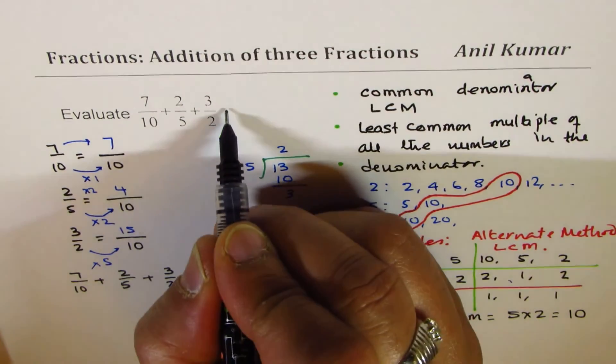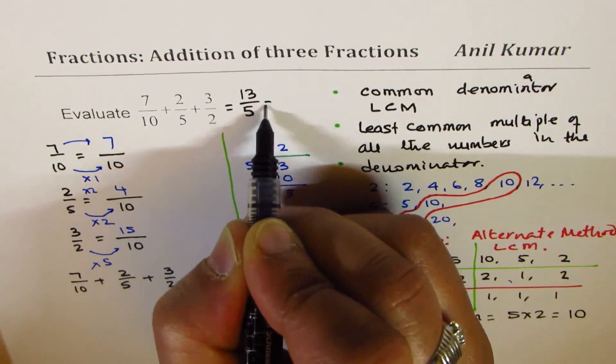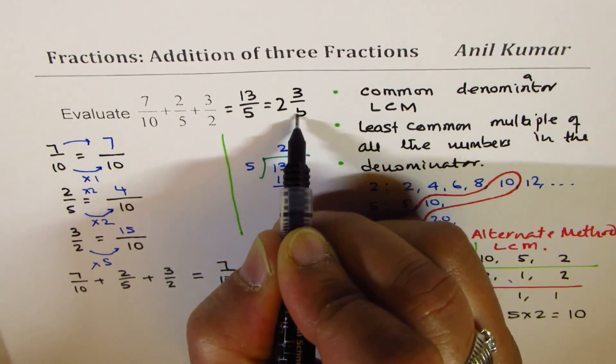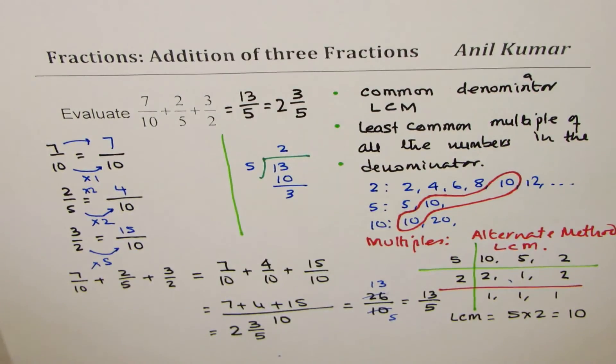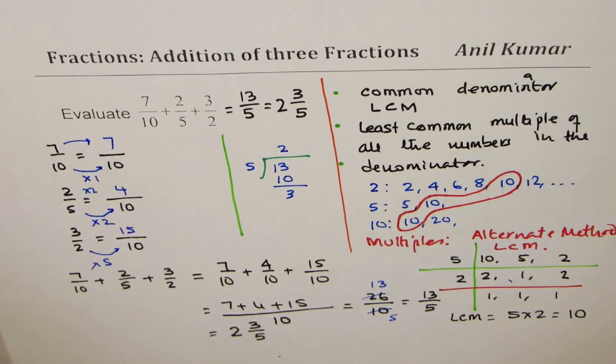So our answer is, it could be written as 13 over 5 or 2 whole 3 over 5. I hope it is absolutely clear what steps we can follow to add fractions which involve 3 numbers as shown here.